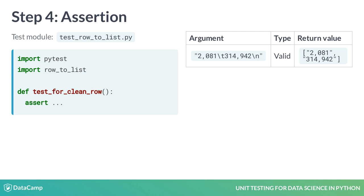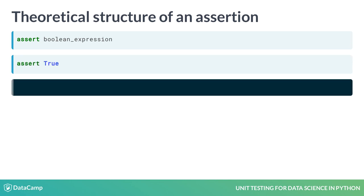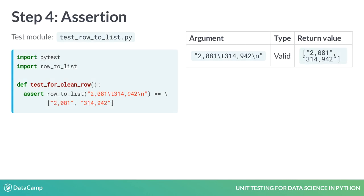The actual check is done via an assert statement, and every test must contain one. The assert statement has a required first argument, which can be any Boolean expression. If the expression is true, the assert statement passes, giving us a blank output. If the expression is false, it raises an assertion error. In this case, we want to check if RowToList returns the correct list when called on the clean row. The expression we use is RowToList called on the argument equals equals the correct list. If the function works, this will evaluate to true and the assert statement will pass, making the test pass. If the function has a bug, it will evaluate to false, the assert statement will raise an assertion error, and the test will fail.